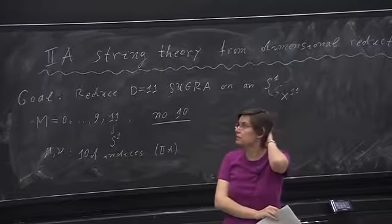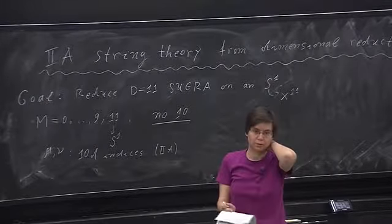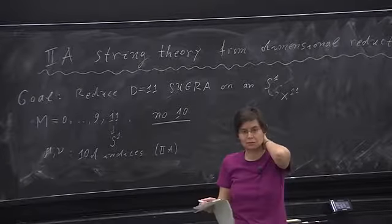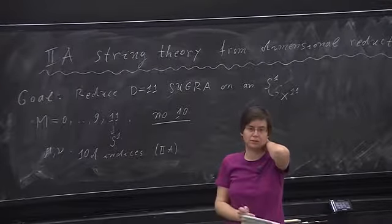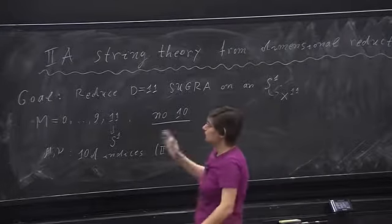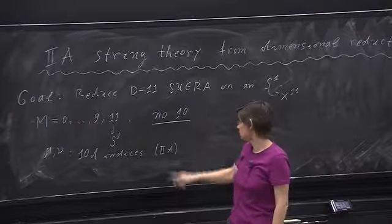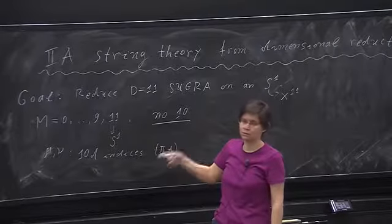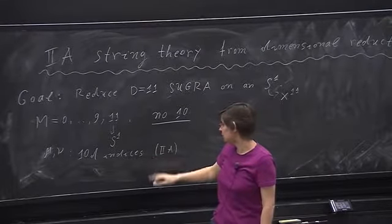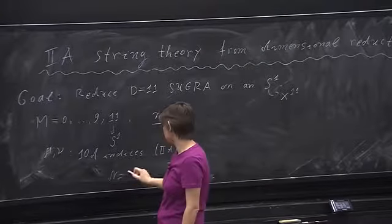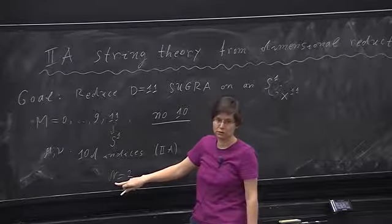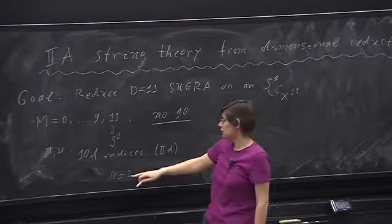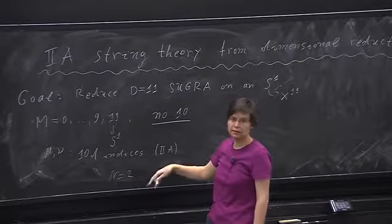At this point you don't know yet, but when you quantize the superstring you'll see there are different options: choosing one you obtain Type IIA, choosing another you obtain Type IIB. Type IIB is not obtainable directly by reducing from M-theory — the relation between IIA and IIB is called T-duality. From the 10-dimensional point of view, both theories have N=2 supersymmetry, meaning two spinors in 10 dimensions as parameters of transformations. In IIA and IIB, the difference is that in one case those spinors have the same chirality, in the other they have opposite chiralities.